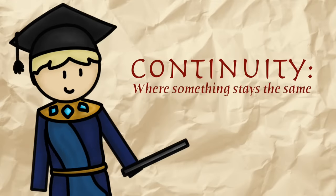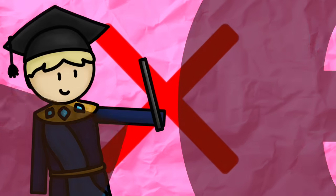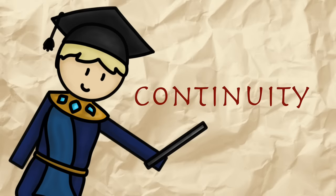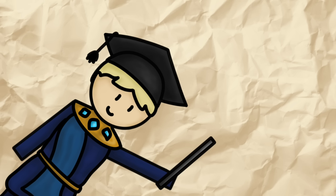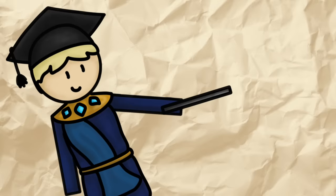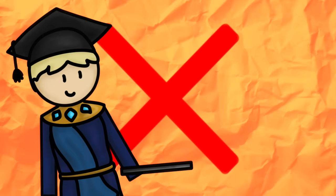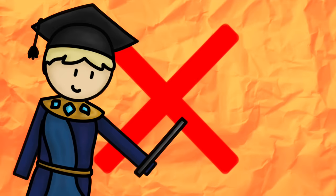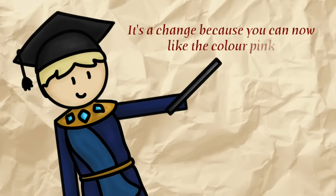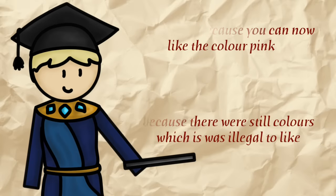Continuity is where something stays the same, or similar. It might be illegal to like the colour pink in the 11th century, and by the 19th century it's still illegal, so you could say there was continuity between these two periods. It's important to note, however, that there can be continuity in one sense and a change in another. A turning point can also be a turning point for one thing and not for another. For instance, if it was also illegal to like the colour orange, then 1977 would be a turning point for pink but not for orange. So you could say there was a change, because now you can like pink, but overall there was continuity, because there were still colours which it was illegal to like.